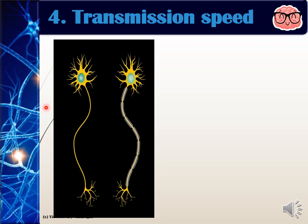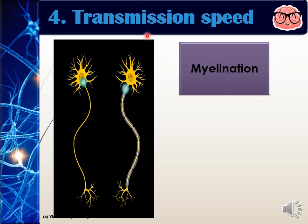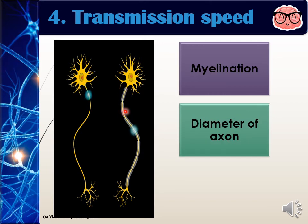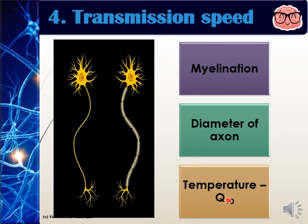The final characteristic is transmission speed. This picture shows you the myelinated neuron transmitting impulse much more quickly than the unmyelinated neuron. So clearly, myelination is a factor in determining transmission speed — if myelin is present, transmission is faster. The second factor is the diameter of the axon: if the axon is thicker, it can transmit impulse faster. And the third is temperature, based on Q10, which means that every increase of 10 degrees Celsius can double the speed at which impulse is transmitted.